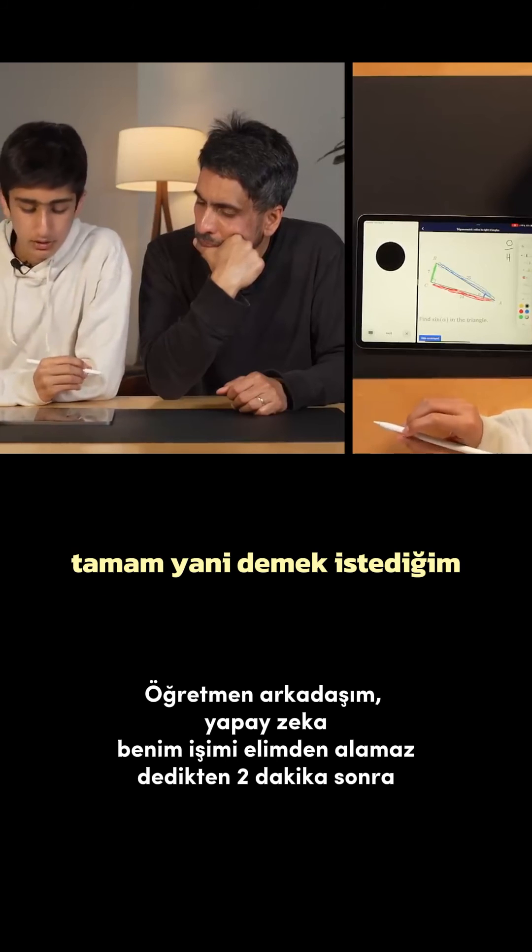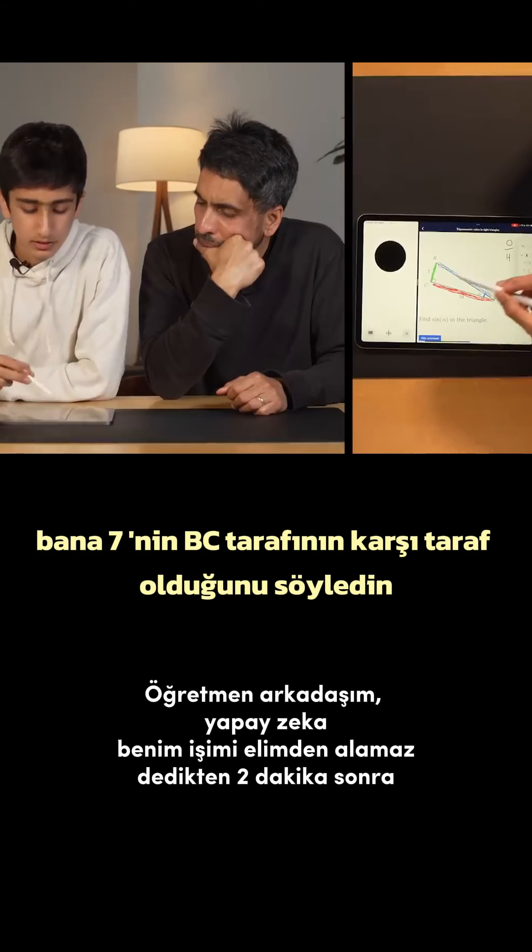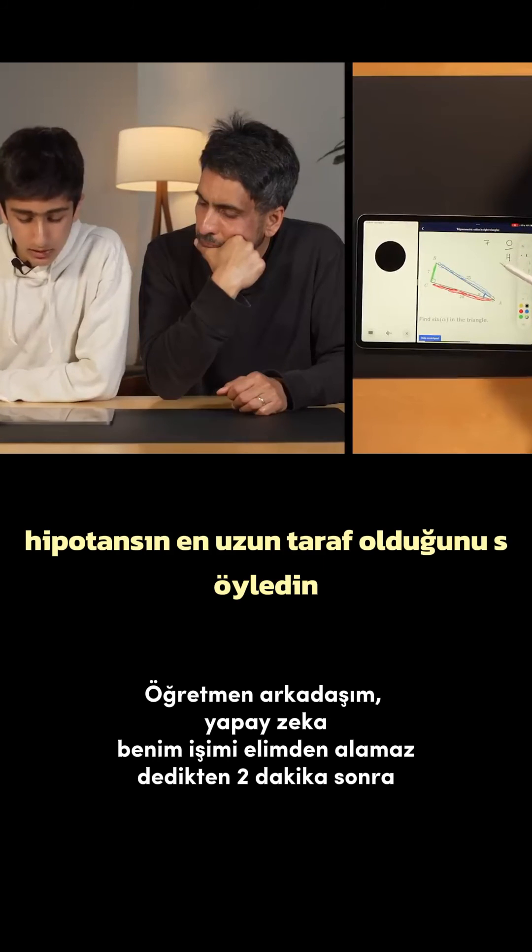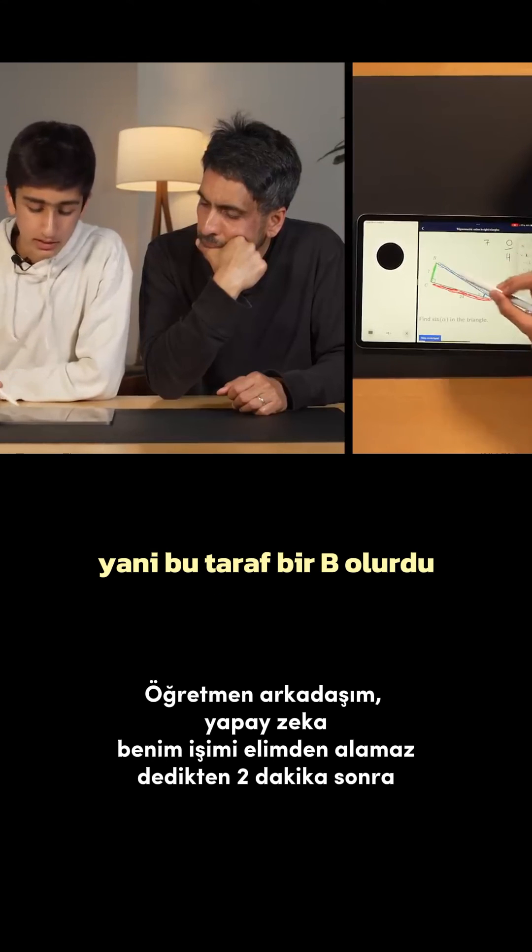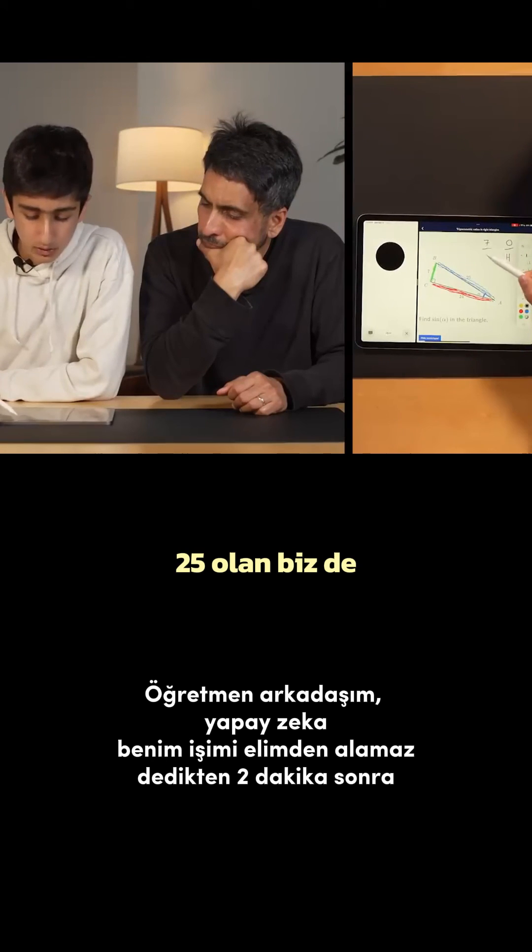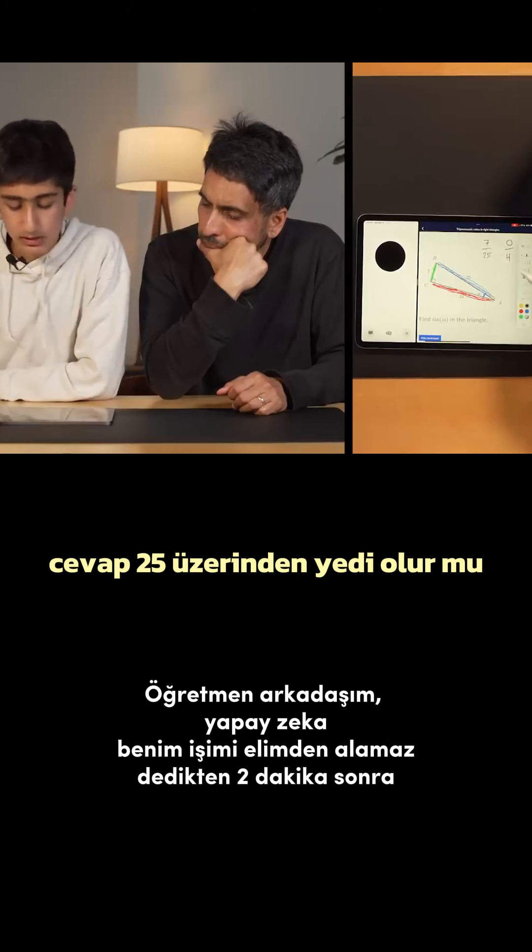Okay. So, you told me that seven, this side BC is the opposite side. And then you said that the hypotenuse is the longest side. So that would be this side AB, which is 25. So would the answer be seven over 25?